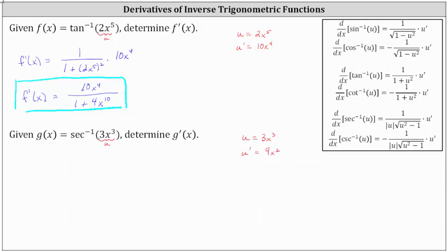Looking at our derivative formulas, the derivative of inverse secant of u with respect to x is equal to one divided by the product of the absolute value of u and the square root of the quantity u squared minus one, times u prime. Therefore, g prime of x is equal to one divided by the product of the absolute value of 3x cubed and the square root of the quantity the square of 3x cubed minus one, times u prime where u prime is 9x squared.